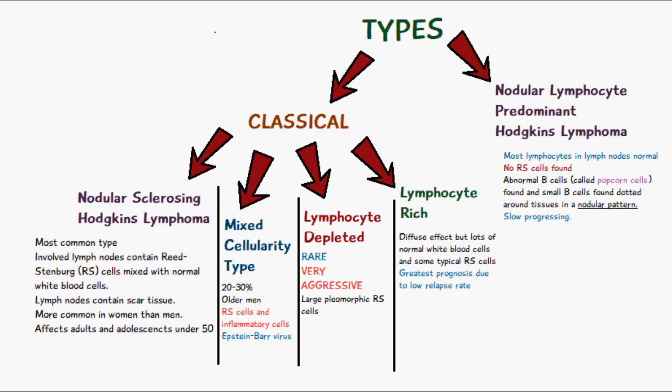Nodular sclerosing Hodgkin's lymphoma is the most common type. It involves the lymph nodes which contain Reed-Sternberg cells, which are a typical diagnostic tool for Hodgkin's lymphoma.